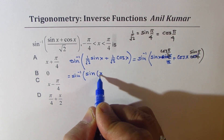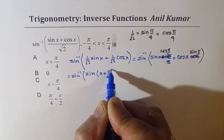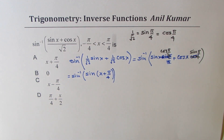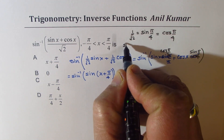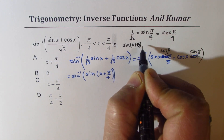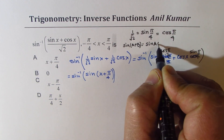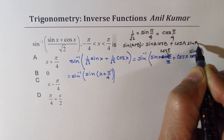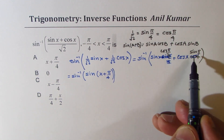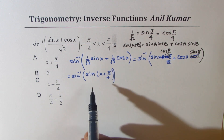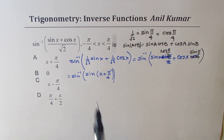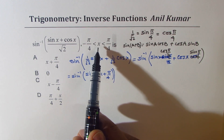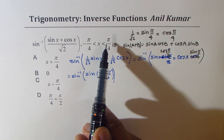I hope this step is clear. What we did was use the sine addition formula: sin(A + B) = sin A · cos B + cos A · sin B, replacing 1/√2 by cos(π/4) and sin(π/4) to get this result. Now we are given that x is between −π/4 and +π/4.